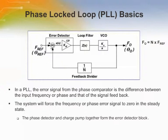A simple block diagram of a Phase Locked Loop is shown in the figure. Typically, a Phase Locked Loop consists of a Phase Detector, a Charge Pump, a Loop Filter, a Voltage Controlled Oscillator, and a Feedback Divider.